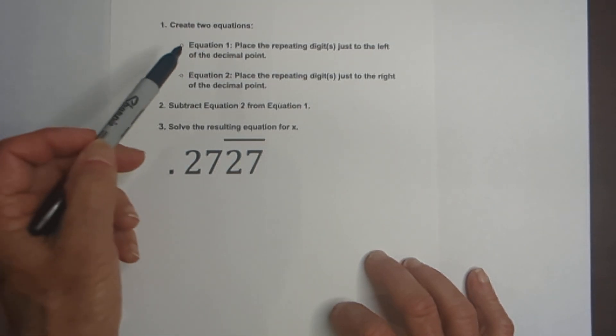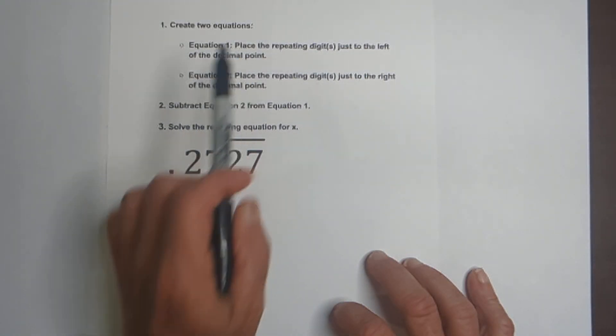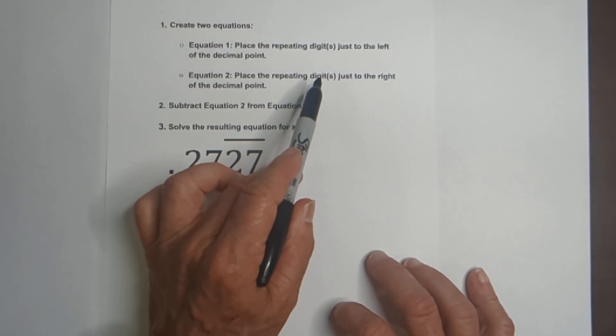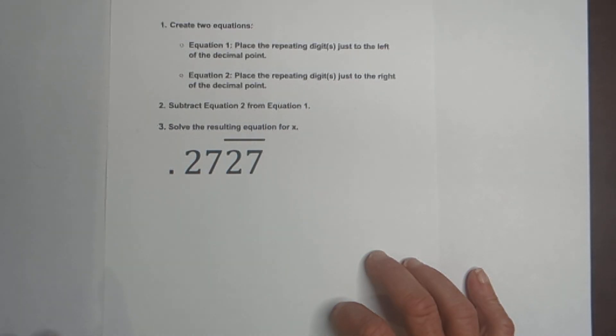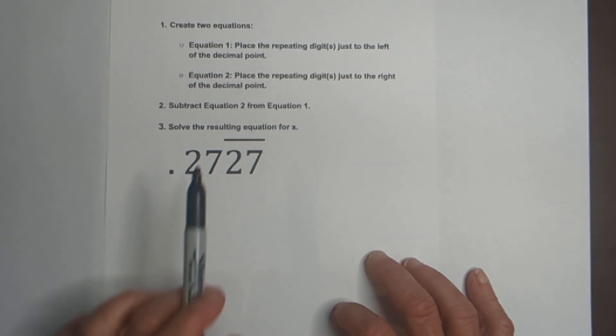We're going to create two equations. Equation one, we're going to place the repeating digits just to the left of the decimal point. In equation two, we're going to put the repeating digits just to the right of the decimal point. And then we're going to subtract equation two from equation one and then solve for x. So let me set this up and I think this will make some sense to you.